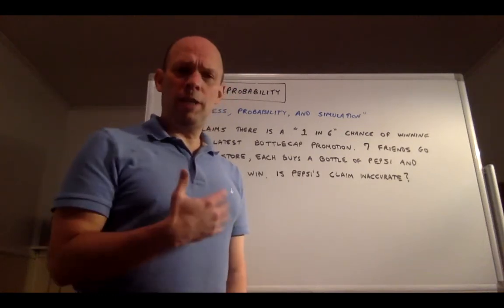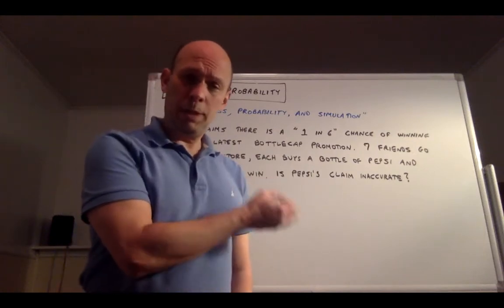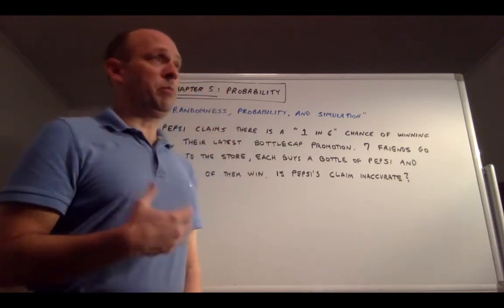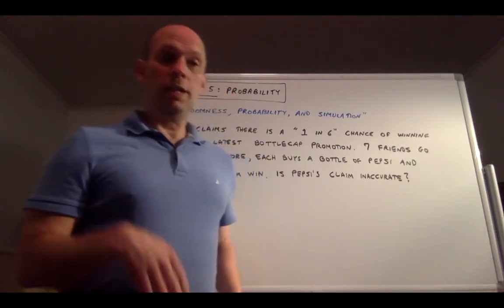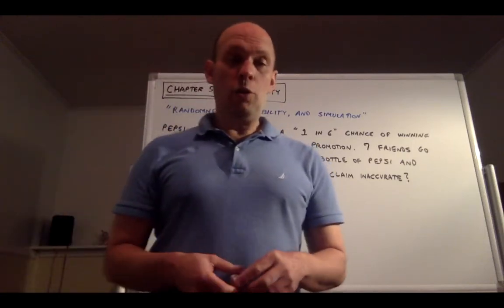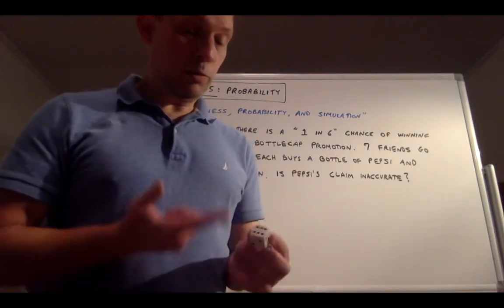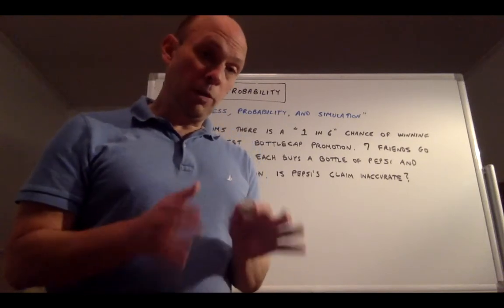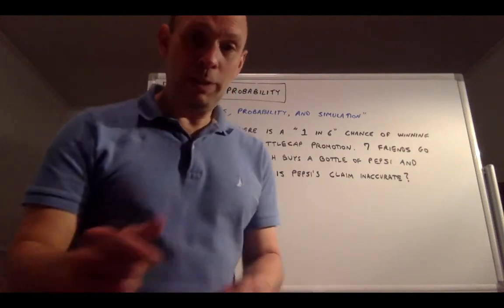So what we want to do is figure out how likely would it be for 3 or more people to win in this bottle promotion if in fact it was only a 1 in 6 chance of winning. One way we can answer this question is by simulation. So let's say I'm rolling this die, and I say if it lands on 6, that's going to be a winner, because we know a 6 has a 1 in 6 chance of landing face up when I roll this die. So what I'm going to do is roll it 7 times and count the number of 6s I get. So let me demonstrate that. Here we go. I'm going to roll the die 7 times.